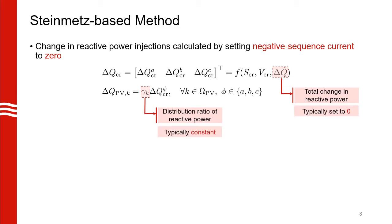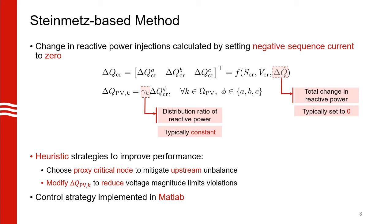Typically, we set delta Q-hat to zero so that the voltage profile in all the other parts of the network does not change significantly. We also equally distribute the total change in reactive power injections, which means gamma_k is the same for all downstream PV systems. One thing to note is that we only control downstream PV systems. If there are more PV systems upstream, we choose another critical node very close to the substation to help reduce unbalance at our downstream critical node. This basically partitions all the PV systems into two groups which can then work independently to mitigate unbalance at both critical nodes.